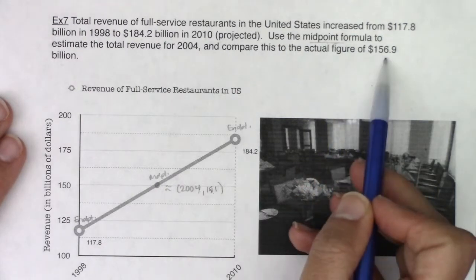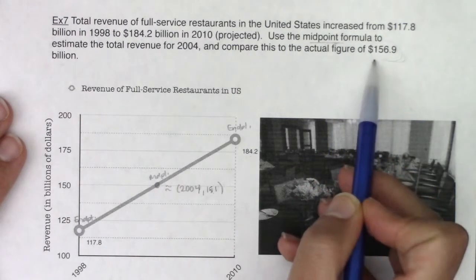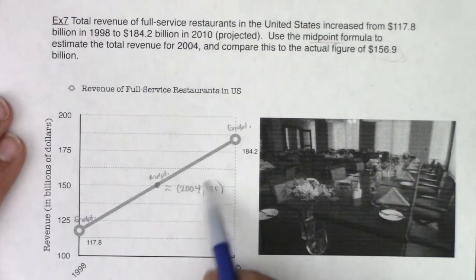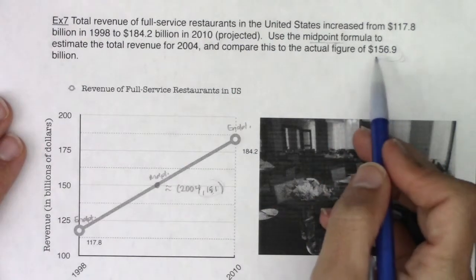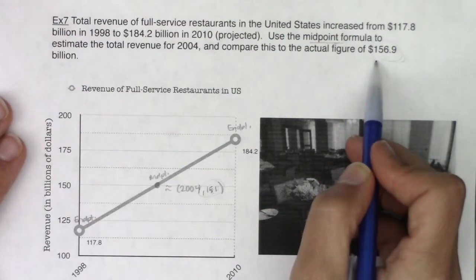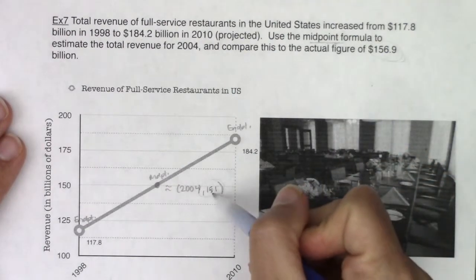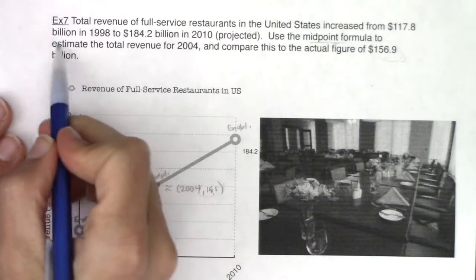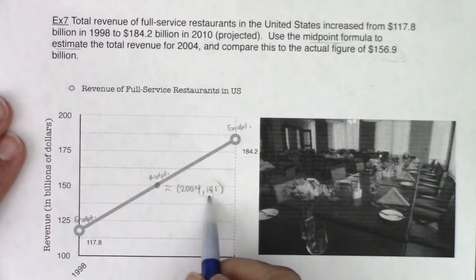So we thought the revenue was going to be 151, but the actual revenue was 156.9. So our guess, our estimate, we were estimating, we had an underestimate.